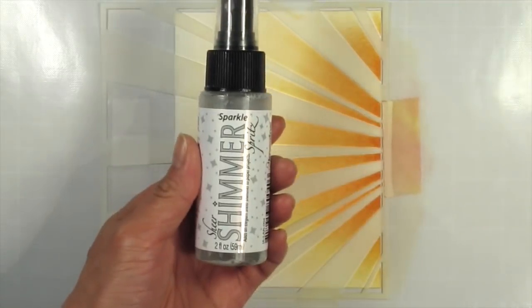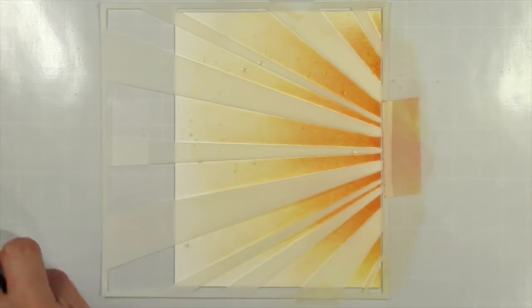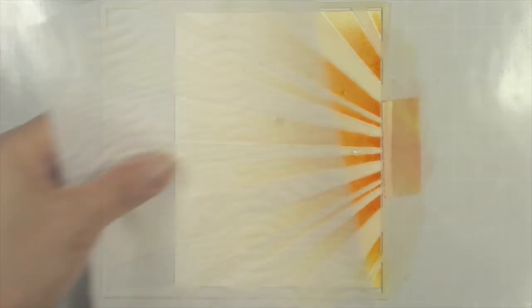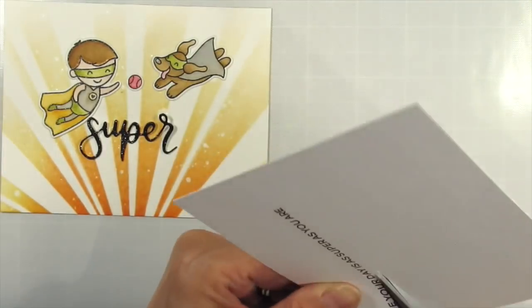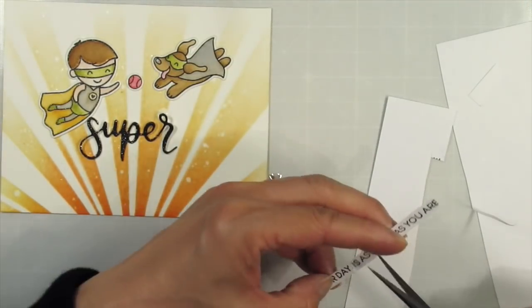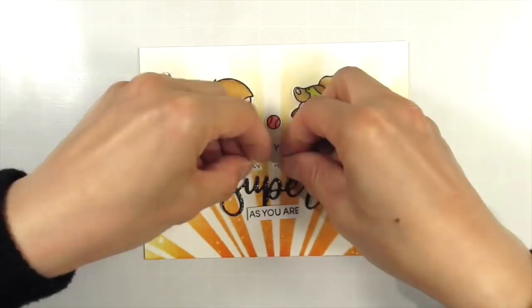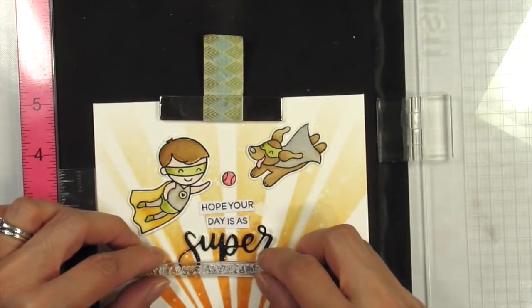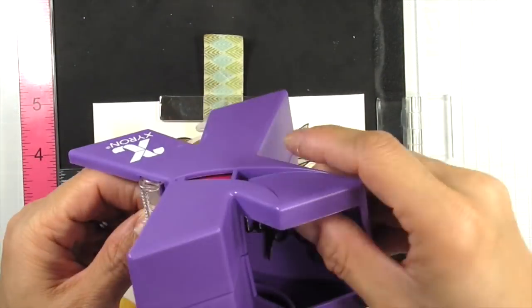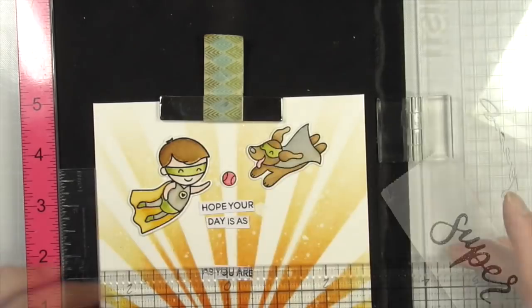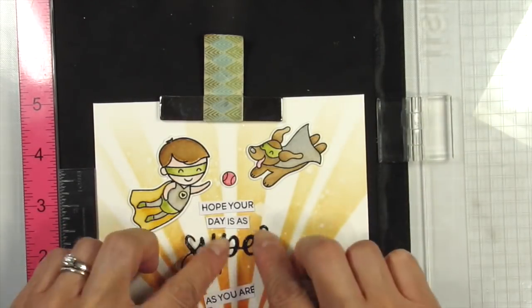To create the custom sentiment on the second card I do a mock up for the sentiment so I can get the placement just right before stamping. I stamp and trim the sentiment that reads, Hope your day is as super as you are. Only I'm replacing the stamped super with the die cut super, this time in black glitter cardstock. I wrestled with whether or not to cut this stamp apart since it would have been so much easier. But in the end I decided not to, opting for masking and multiple stamping.